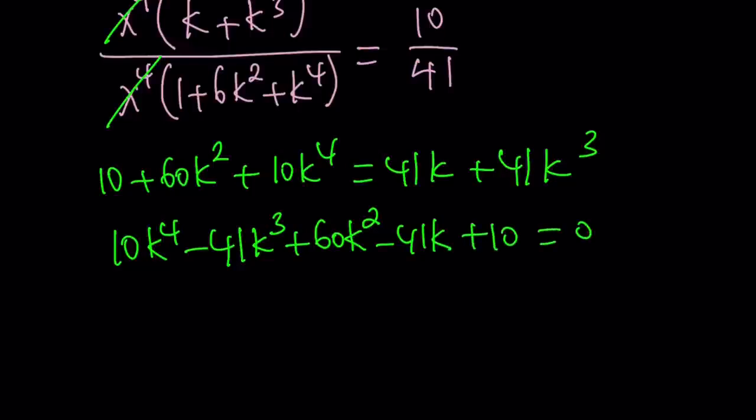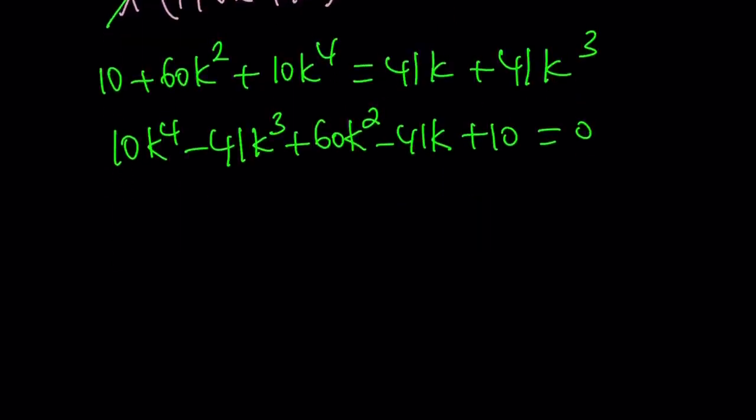Awesome. This is a quartic equation and solutions are not very easy to find, but there's a way to do it. You can use a calculator or the rational root theorem. But let me give you the solutions for free. k = 1/2, k = 2, and there are two complex solutions which are given by (4 ± 3i)/5.